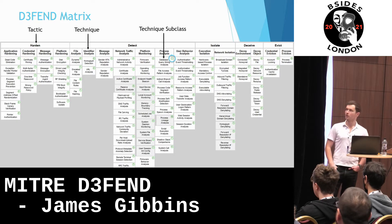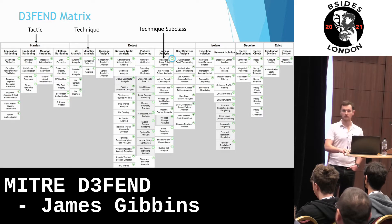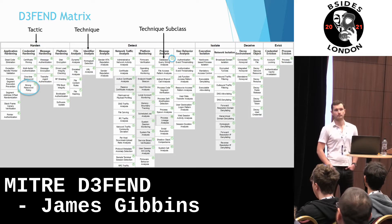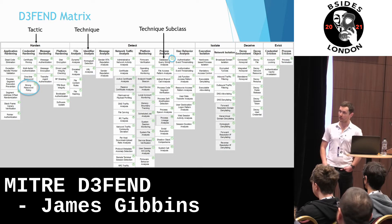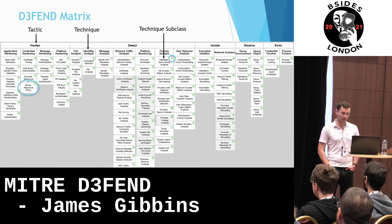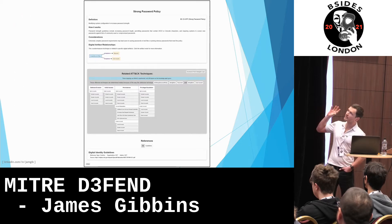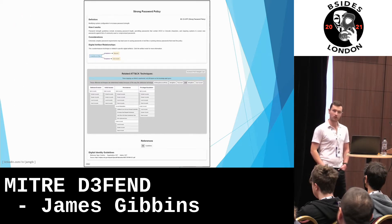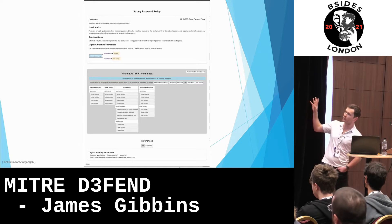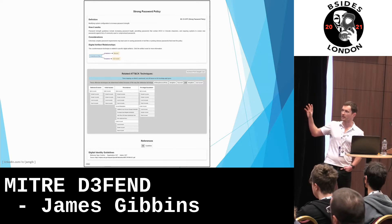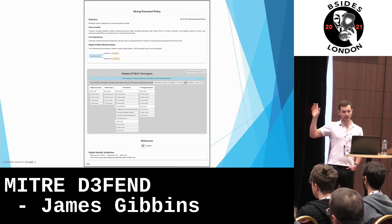To continue our exploration, let's pick one countermeasure and look into it a bit further. I thought strong password policy, because it's pretty easy to explain, and I'm sure all of you know what a password is. It's still very important to cybersecurity, because that's still how a lot of compromises happen. So, this is the strong password policy countermeasure page — at the top there's some information, in the middle some stuff to do with the ATT&CK framework, and at the bottom, references.